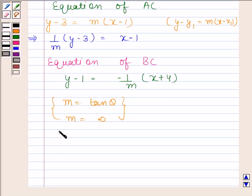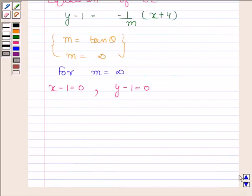So for m = infinity, equation of AC reduces to x - 1 = 0 and equation of BC reduces to y - 1 = 0. This implies x = 1 and y = 1.